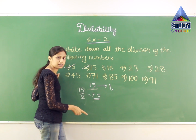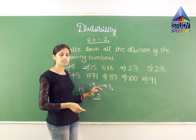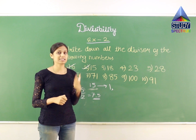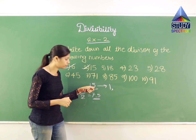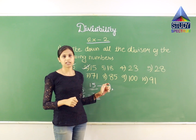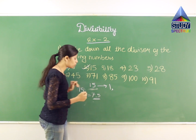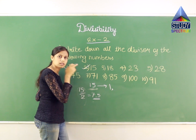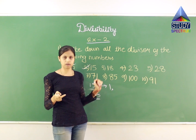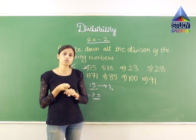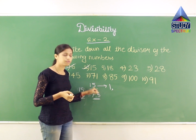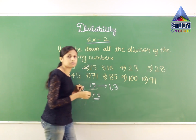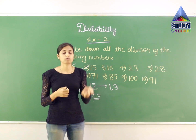So 2 is not a divisor for 15. Now 3: 3×1=3, 3×2=6, 3×3=9, 3×4=12, 3×5=15 — yes, I get 15 in the table of 3. I can also check by adding the digits: 5+1=6, and is 6 divisible by 3? 3×2=6 — yes. So 15 is also divisible by 3, so I have written 3.